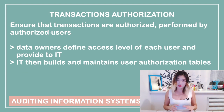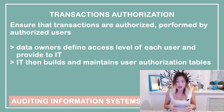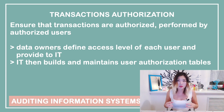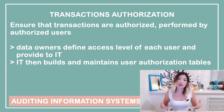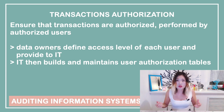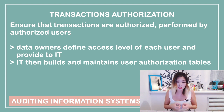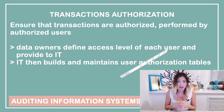Now let's talk about transaction authorization. Simply speaking, companies should have controls in place to ensure that every transaction is authorized. When we speak about authorizations, we generally mean the access level of users. It is the responsibility of the user department — department managers, system owners, or data owners — to define the level of access for each user and regularly review it based on the current user's job description. IT then uses this information to create and maintain user authorization tables or user access lists.